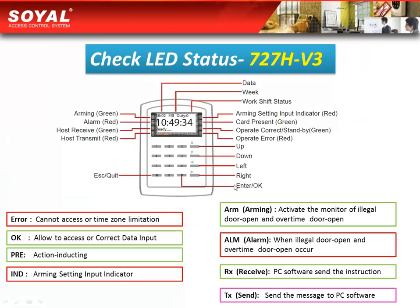This picture shows all the buttons and lights of the 727H V3 and what functions or meanings they represent. When it shows red light, it means you are not allowed to enter — it might be an invalid card, wrong password, or the limitation of time zone. If you see the green light, it means you are allowed to access; you input the correct password or your card is valid. In some other situations, like if someone opens the door illegally, the alarm light will appear.